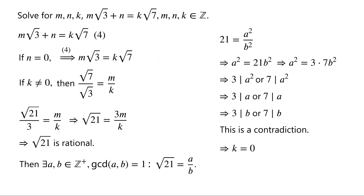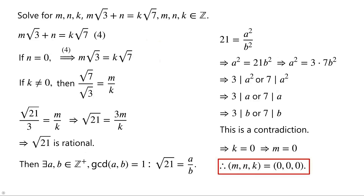Then from the equation we know that m = 0. Hence, (m, n, k) = (0, 0, 0) is the only solution of the original equation.